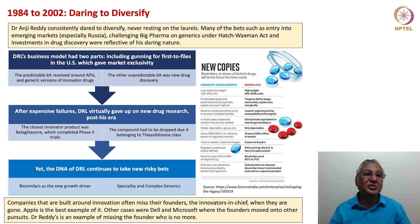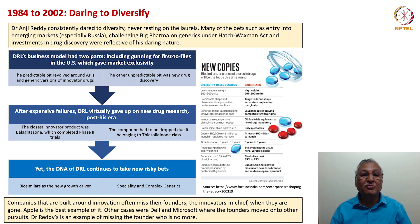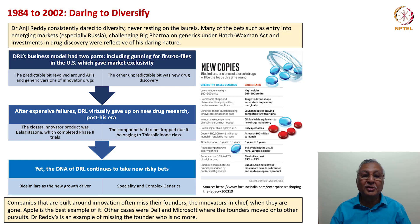During 1984 to 2000, daring to diversify characterized Dr. Reddy's strategy and execution. Dr. Anji Reddy consistently dared to diversify, never resting on laurels. Many of the bets — entry into emerging markets especially Russia, challenging big pharma generics under the Hatch-Waxman Act, and investments in drug discovery — were reflective of his daring nature. DRL's business model had two parts: gunning for first files in the US which gave market exclusivity, and the API and generic versions as the pivot. The unpredictable bit was new drug discovery; after expensive failures, DRL virtually gave up on new drug discovery post his era.